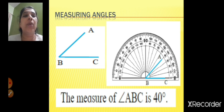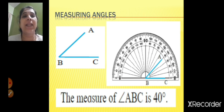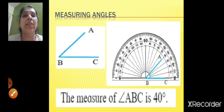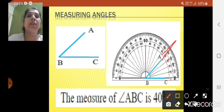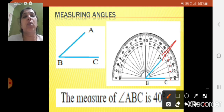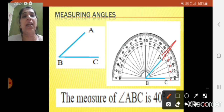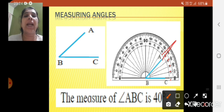For angle ABC, you keep the center of the protractor on the common point B. By seeing the angle you can recognize it is an acute angle. Starting from the right-hand side: 0, 10, 20, 30, 40 — the line falls on 40 degree, so measure of angle ABC is 40 degree. To draw an angle of 40 degree, draw line BC, keep the center on B, mark at 40 degree, join the points, name it A, and write measure of angle ABC is 40 degree.